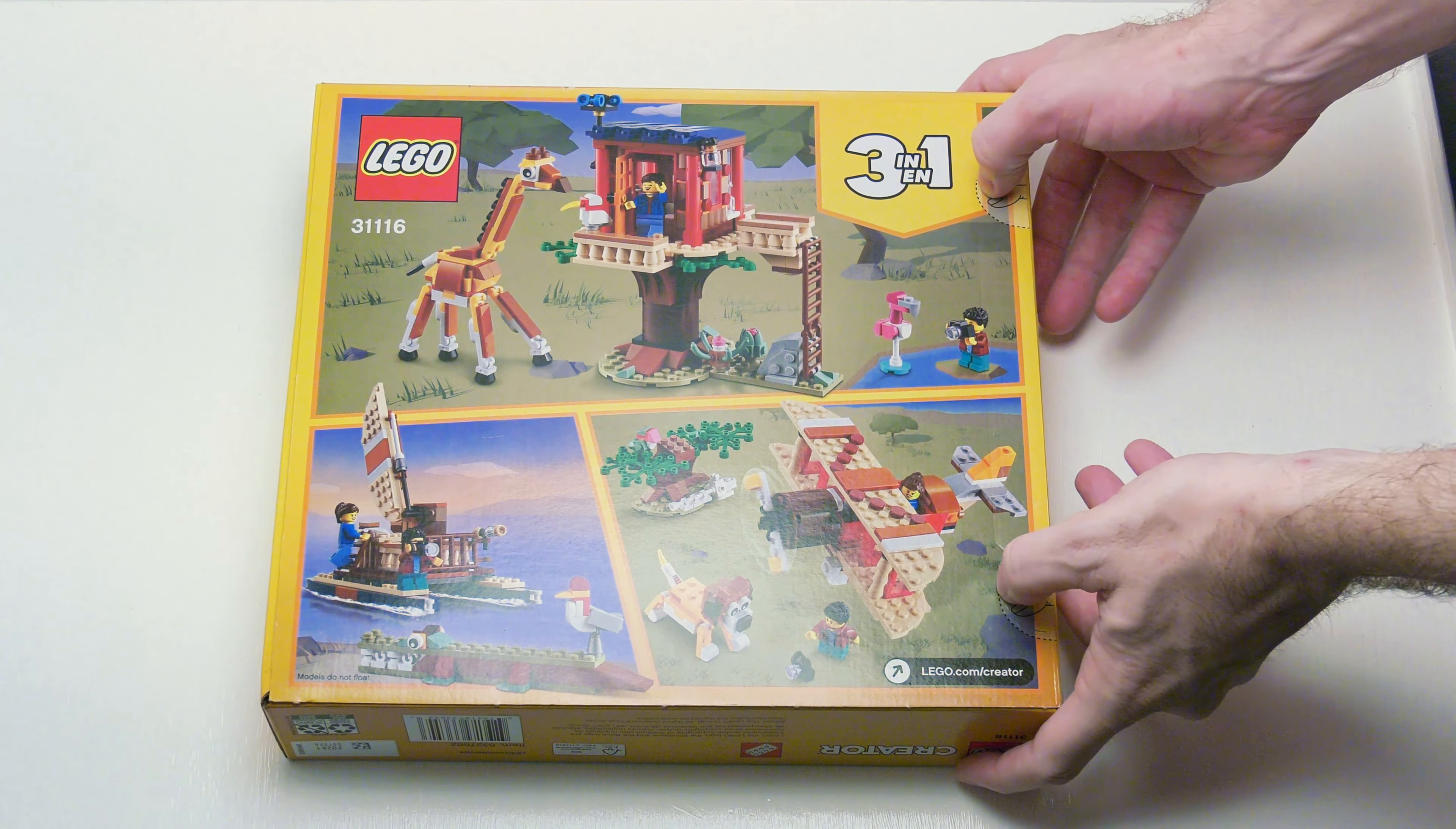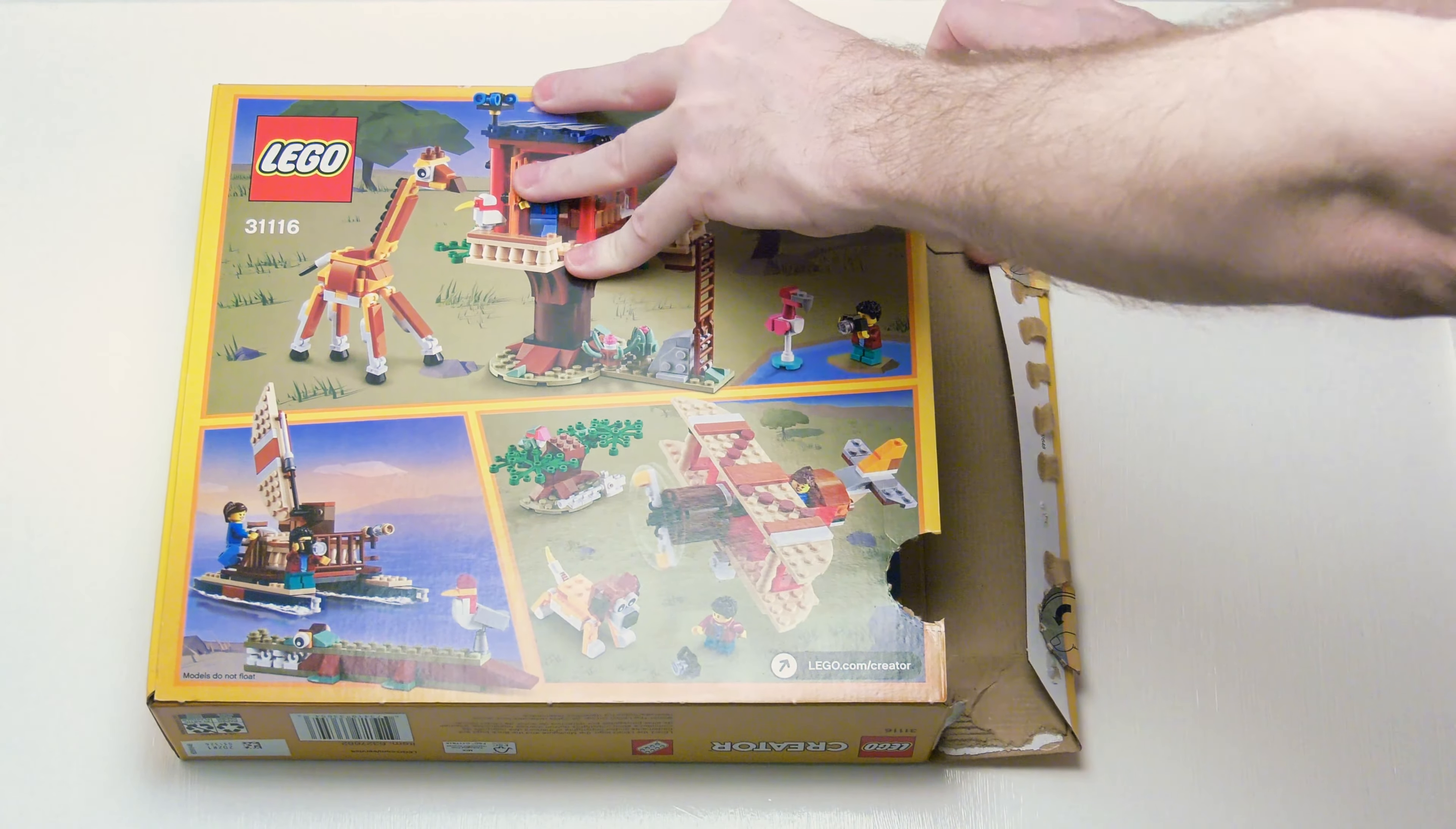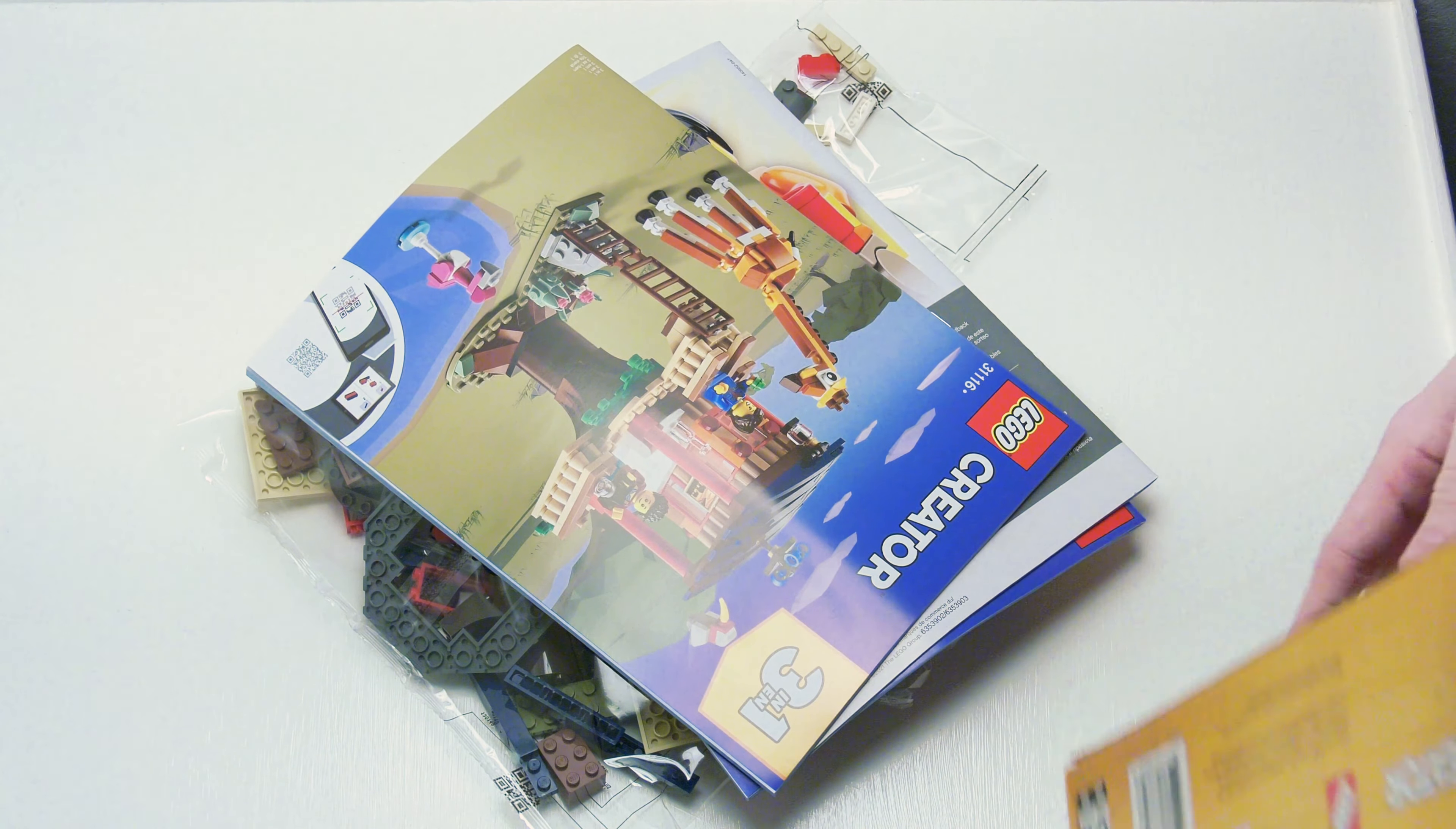So it looks like we just press these two things in and just push this down, kind of crude. Lego made this to where these boxes are not recyclable. Pull all that out. So far just by looking at this, this doesn't look too bad.